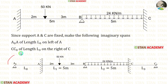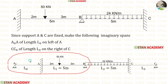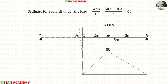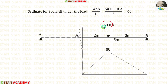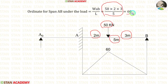Now let us take spans A0A and AB and make the first equation. Let us calculate the ordinate for span AB. In a simply supported beam, if the point load is not acting at the center, the formula to calculate the maximum bending moment under the load is WAB upon L. Here W is 50, A is 2, B is 3, and L is 5. When we apply these values in the formula we are getting 60.